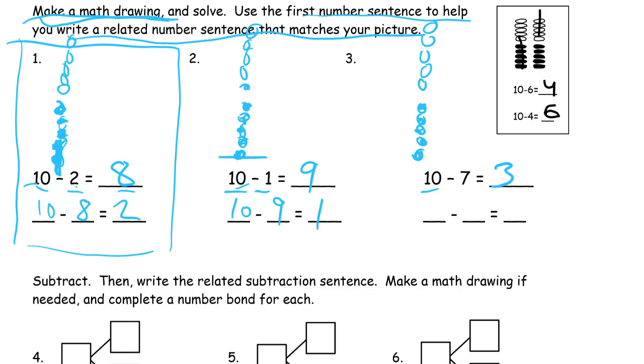If I cross out 7, that's a 5 group and 2 more. Then I have 1, 2, 3 left. If I start out with 10 and I cross out 3, if I crossed out these 3, then I have the other 7 left.